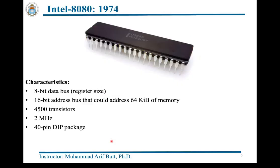Intel 8080 launched in 1974 was an 8-bit microprocessor with a 16-bit address bus. The chip was composed of 4,500 transistors and could operate at a clock speed of 2 megahertz. As you can see in the figure, the 8080 processor was available in a 40-pin DIP package.